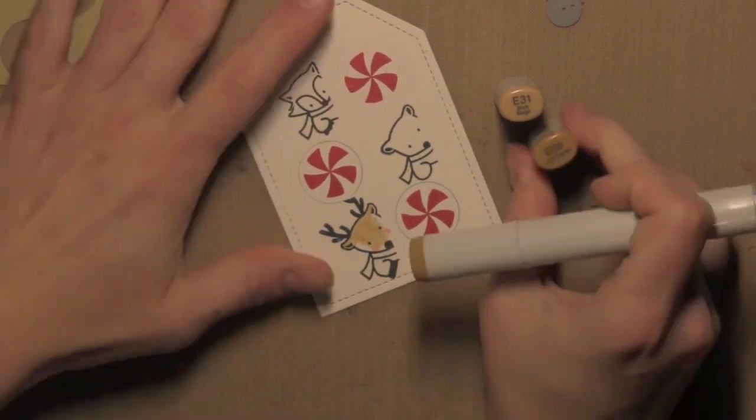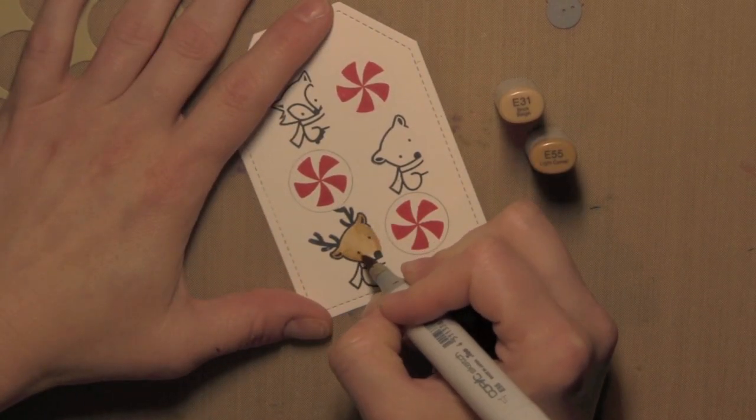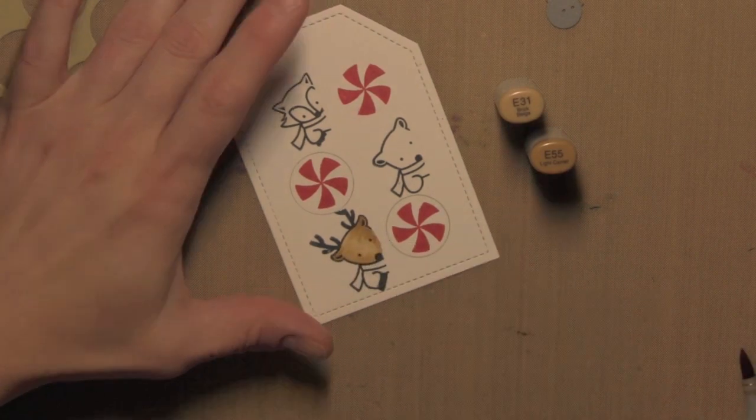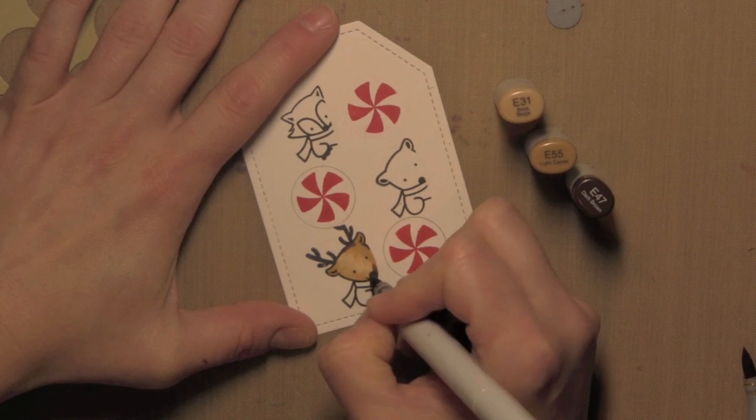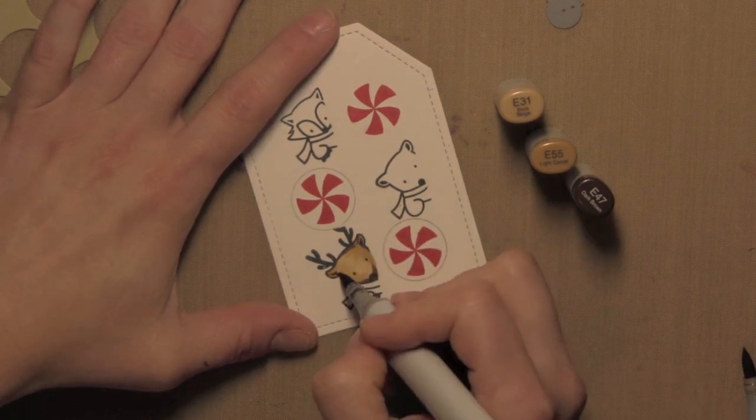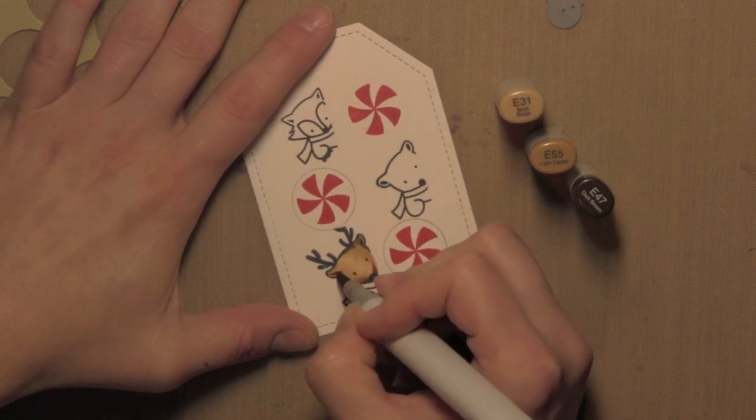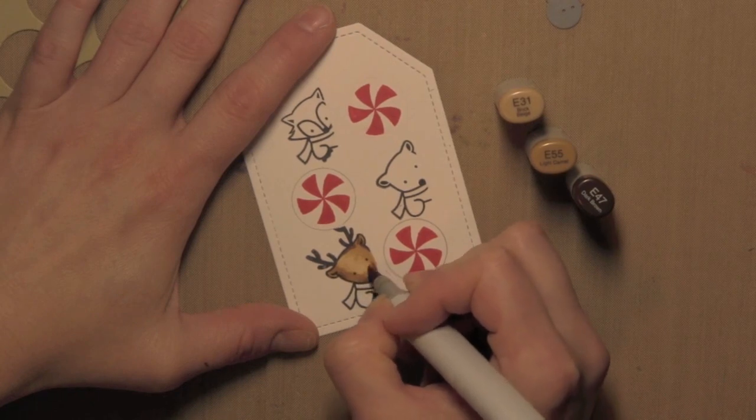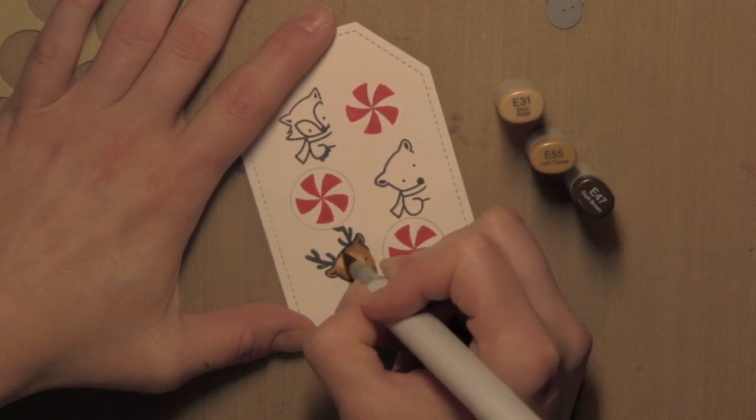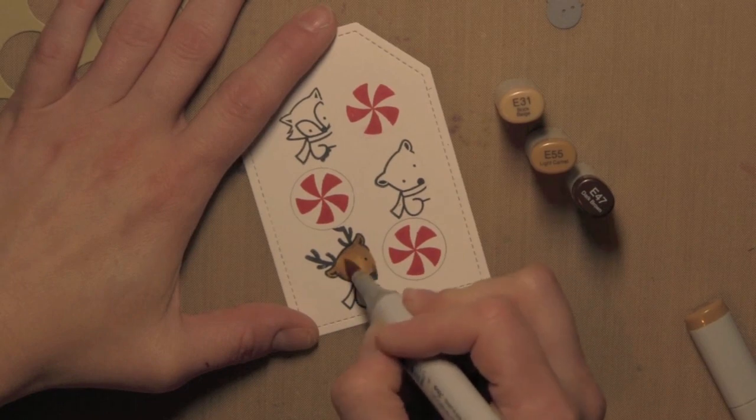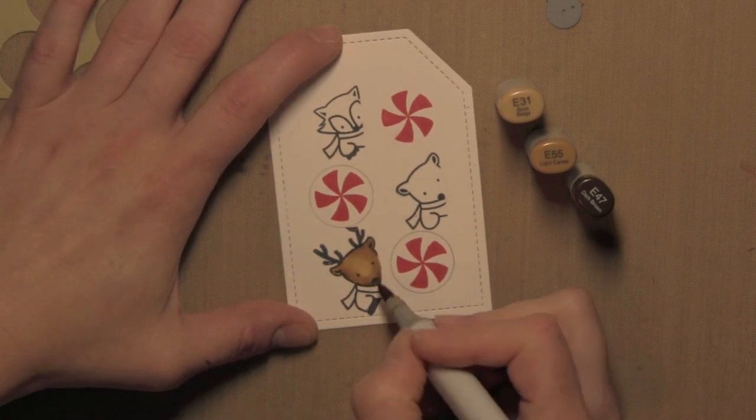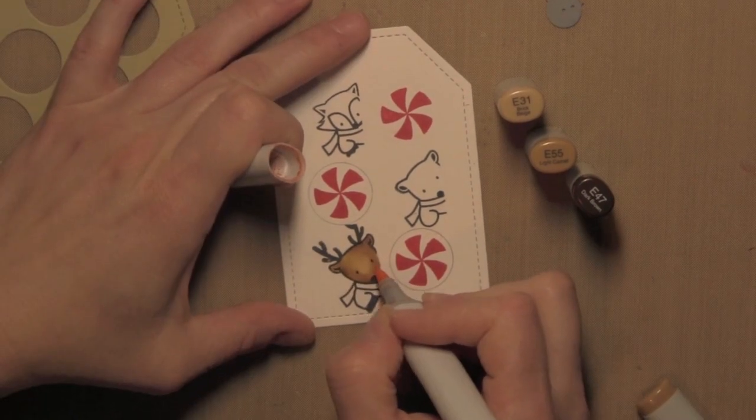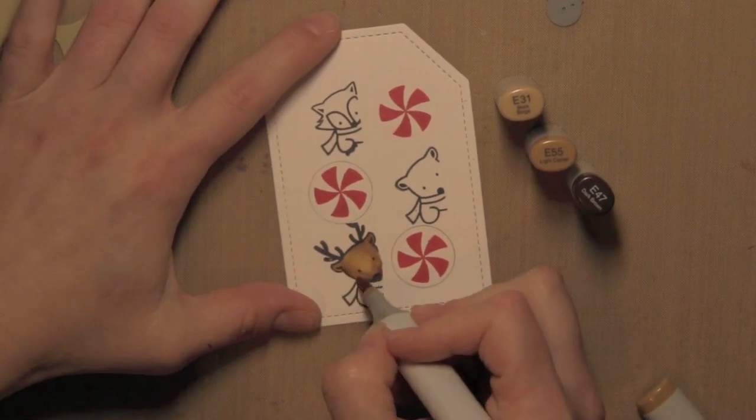Next, I'm going to color in all of my cute little critters with some Copic markers. I also stamped the peppermint shape from the No Peaking stamp set in the alternating circle windows using red ink. That way I have three little critters and then three cute little peppermint shapes so this makes for a perfect holiday themed shaker tag, which would be really fun tied onto a gift.